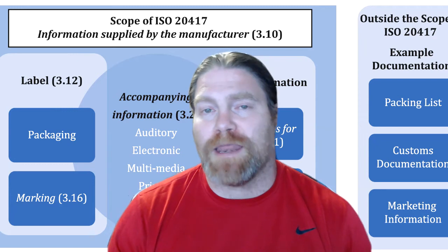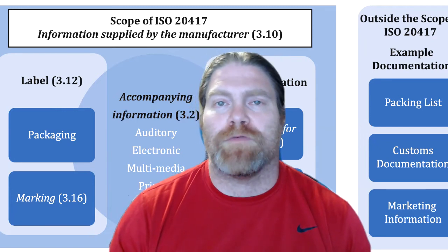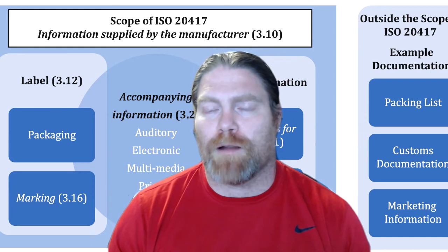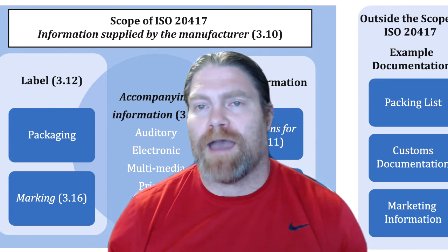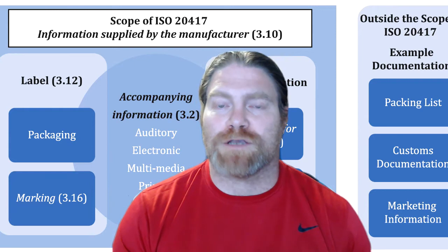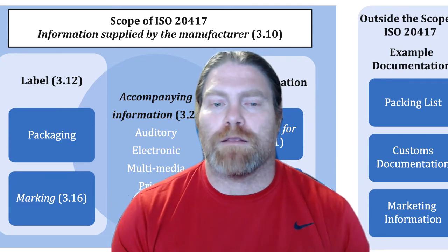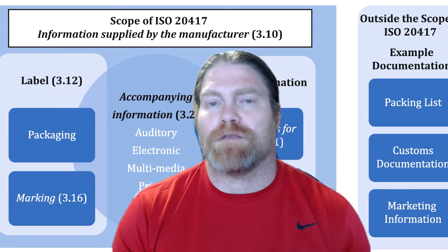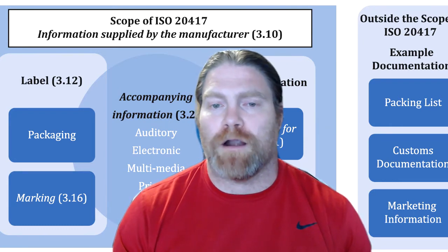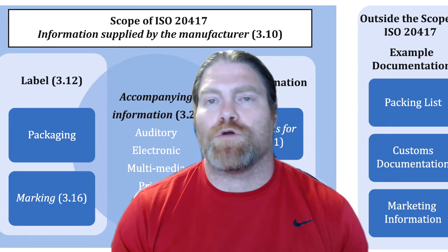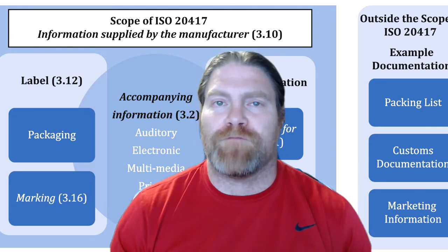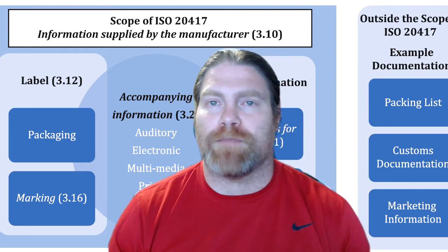We also had the Canadian medical device regulations labeling requirements there, and the FDA requirements. So now that we have an MDR, we go to the same section, Annex 1, and that's called the General Safety Performance Requirements, or GSPR, and we go to the very end. Section 23 is where there are requirements for the information provided by the manufacturer.